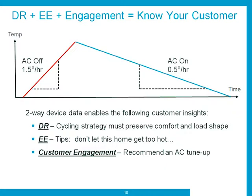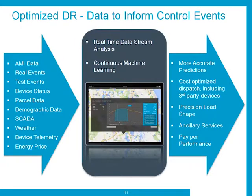Optimized DR is near and dear to my heart because I want to see DR move up the resource stack. We do that by delivering more precise outcomes. At PJM, for example, our devices qualify for sync reserve. We can deliver more precise load shapes to mitigate renewables and more surgical, location-sensitive outcomes. On the EE side, all the accumulated data enables us to deliver more personalized, relevant insights to homeowners. This is all about moving DR up the value stack and giving us more valuable DR instead of some of the less valuable behavioral DR you're seeing in the market now.